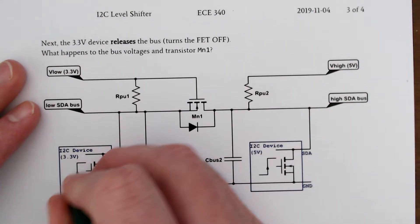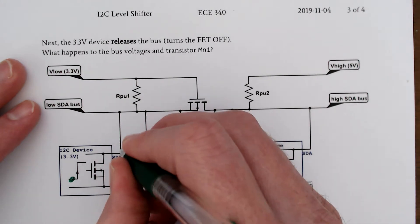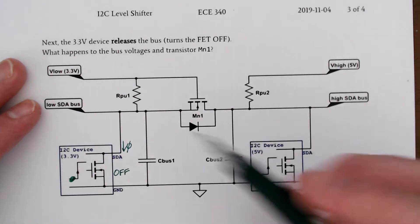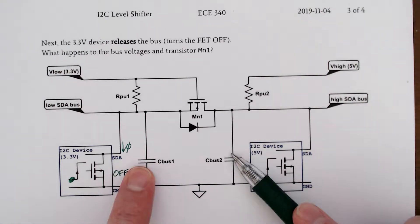Our voltage here goes here, this is now off, that means this current is zero. You'll notice that we have two capacitors here, because we're going to have some transient effects. There's always a capacitance on these nodes, and it's actually an issue.